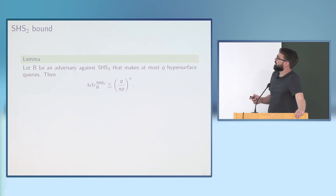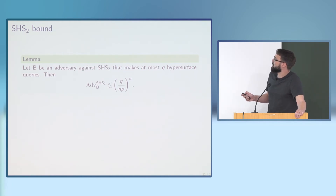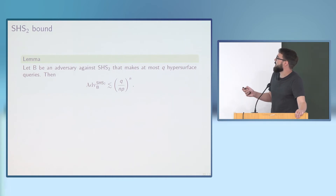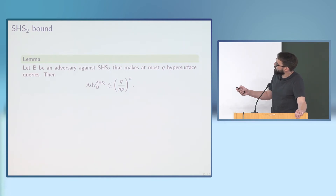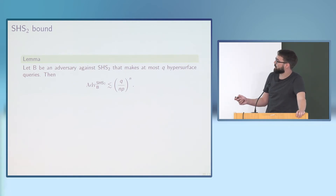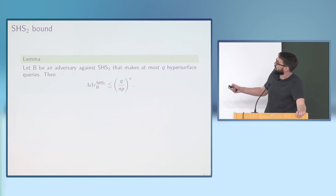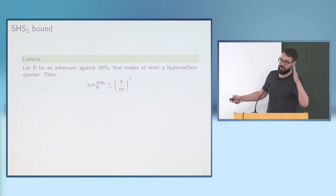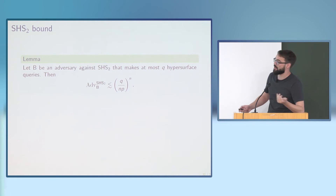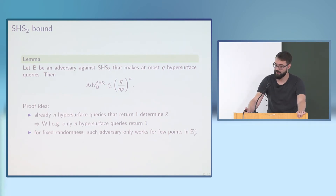Every adversary making at most q queries has an advantage bounded—dropping small constants—by q over n · p^n. The advantage decays exponentially in n. One interpretation: the only way for the adversary to succeed is by brute-force search in each coordinate, spending p hyperplane queries to single out each coordinate. This yields the lower bound.